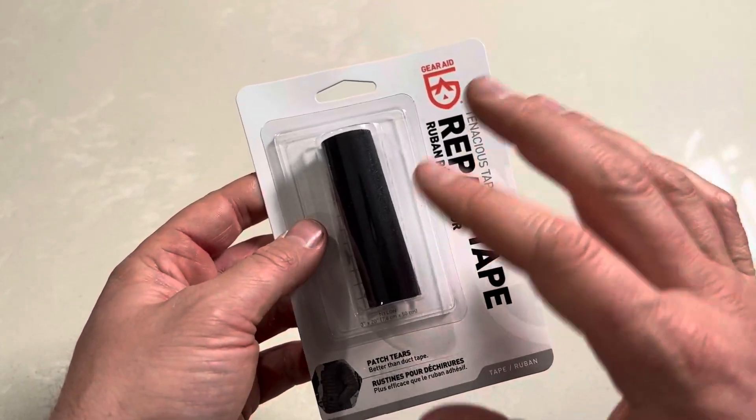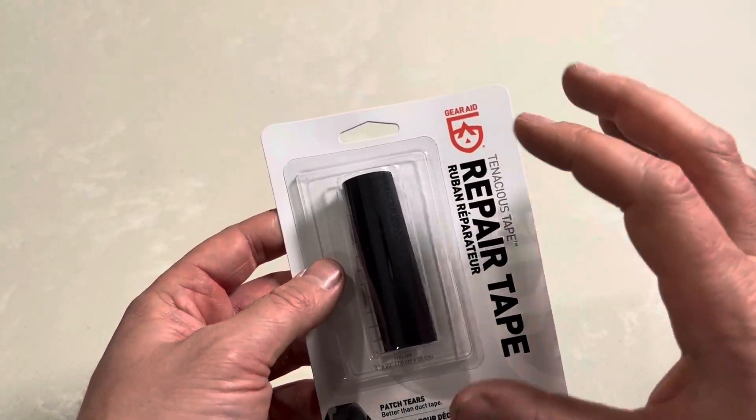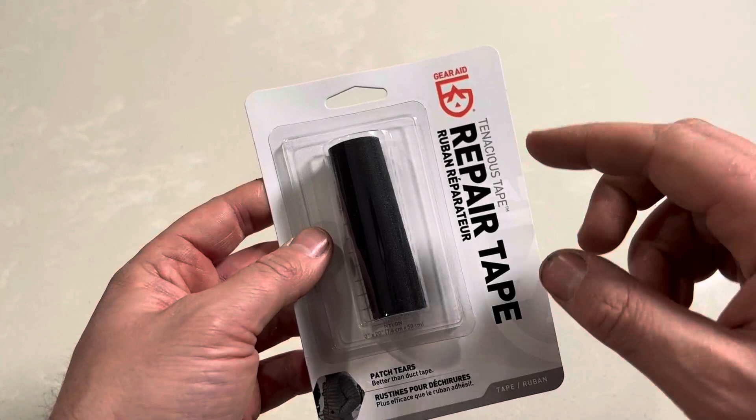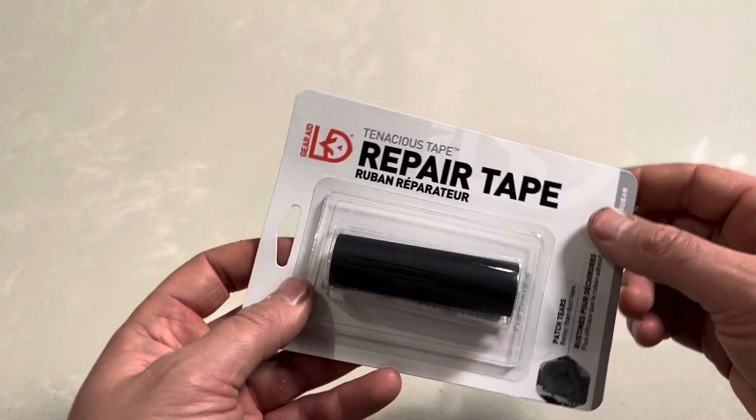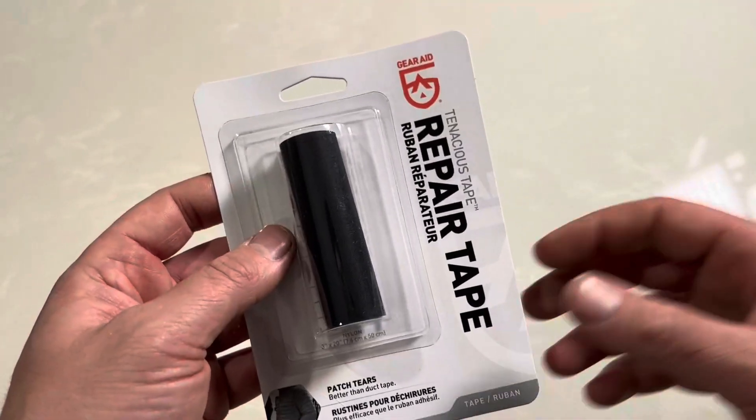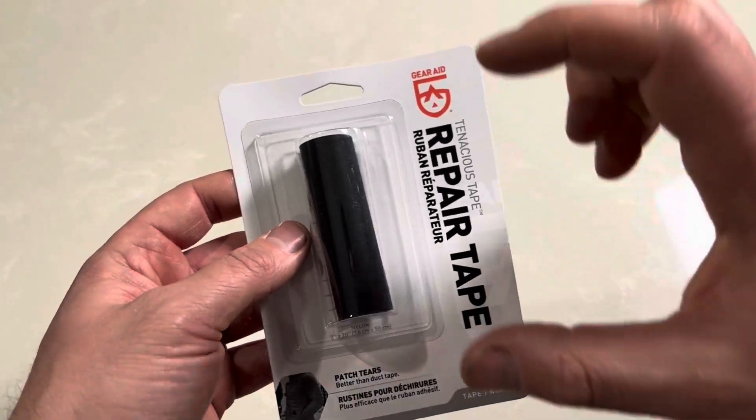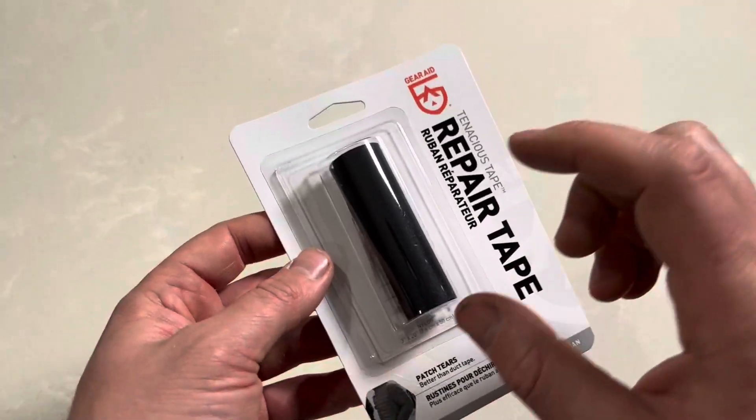Now the patches, and I've used them before and they're great, they're just pre-cut shapes, so pre-cut either squares, rectangles, hexagon patterns. You can buy different patterns, and those are patches that you stick on a rip or a hole.